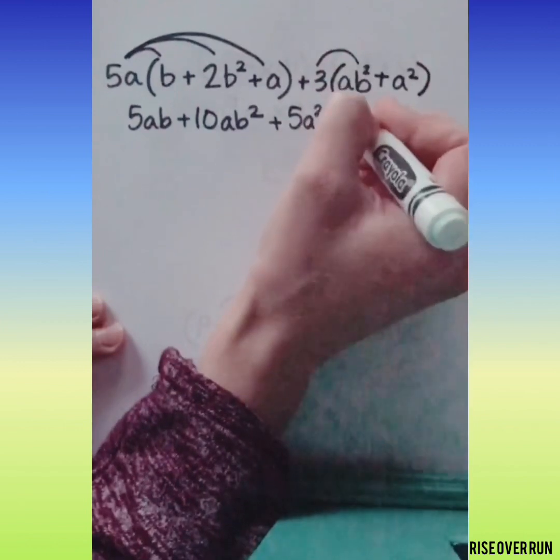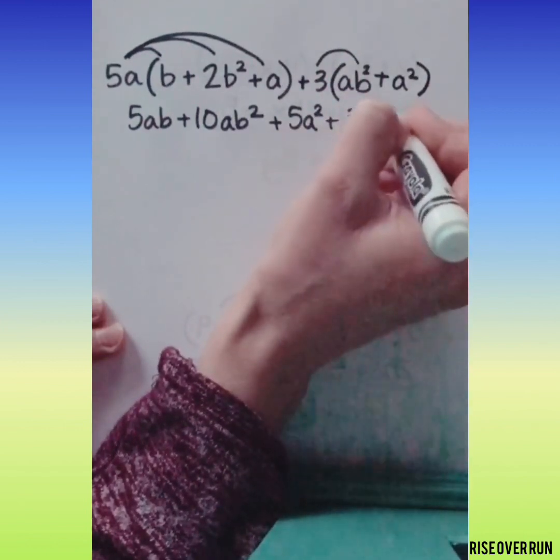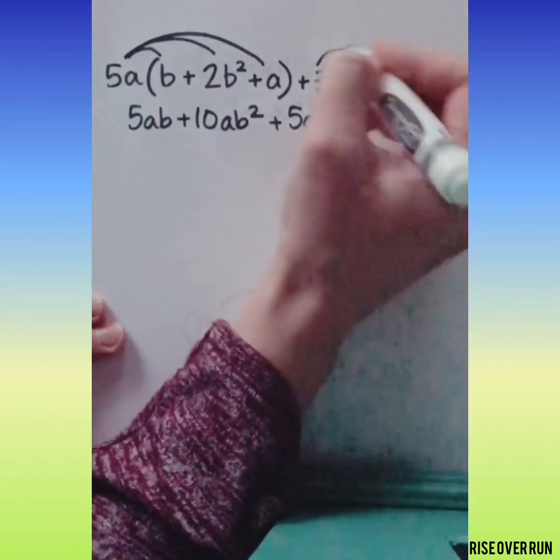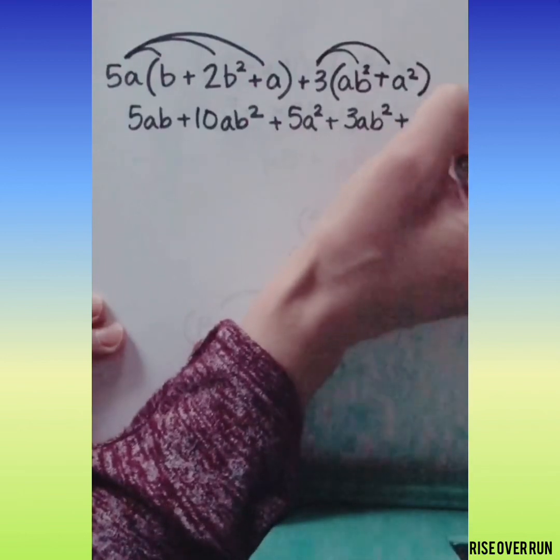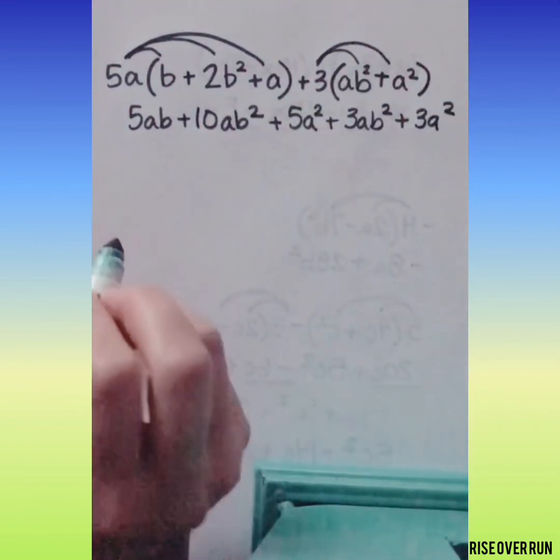Over here we have 3ab squared and 3a squared. Now let's look for like terms.